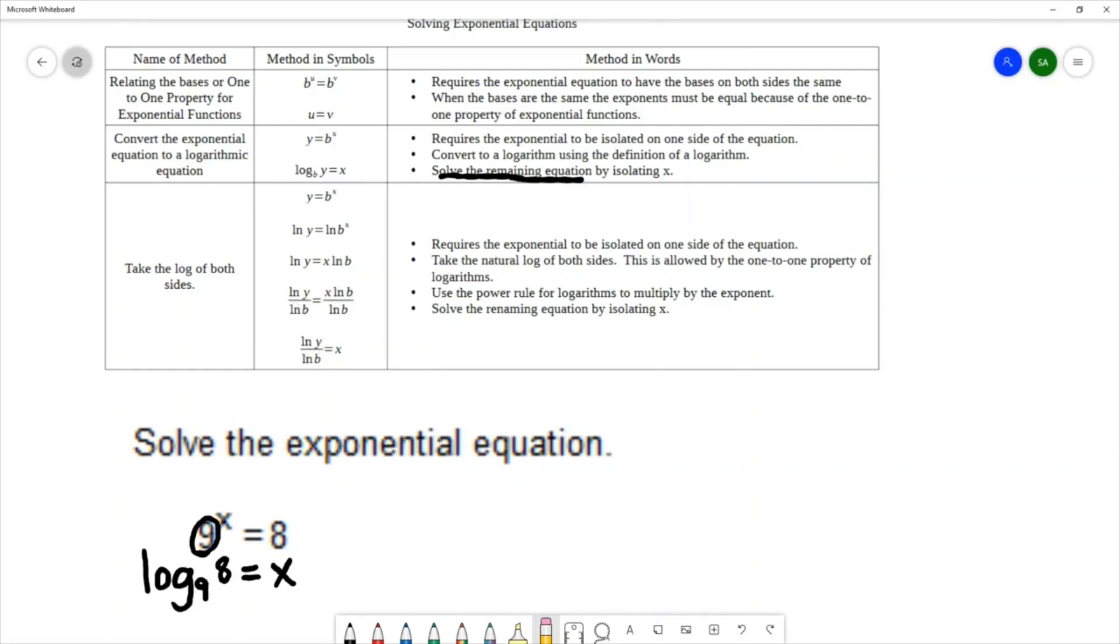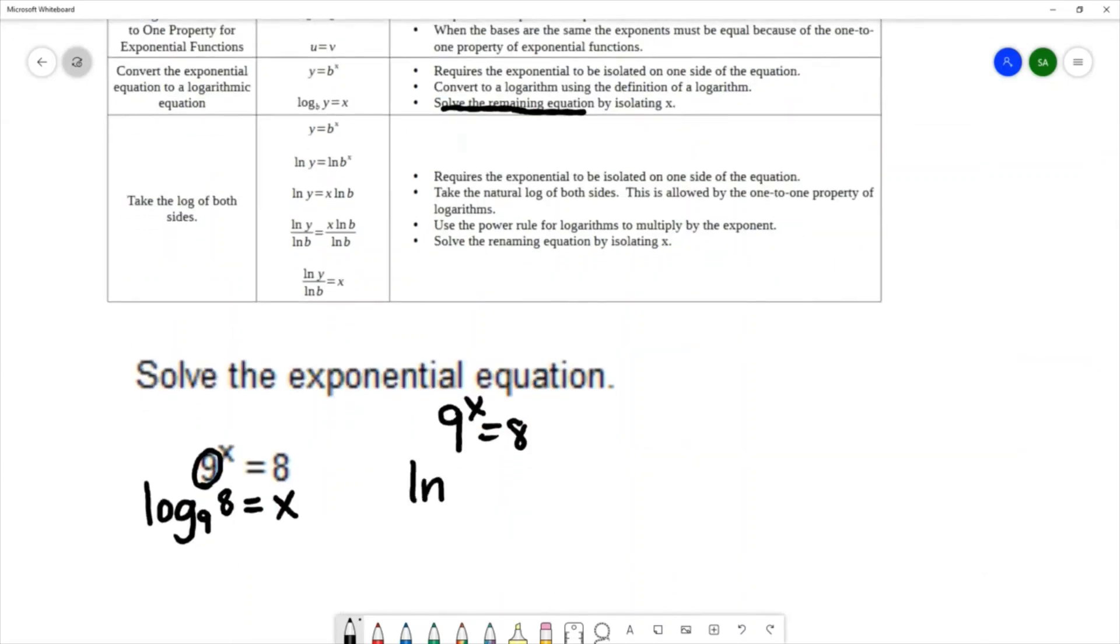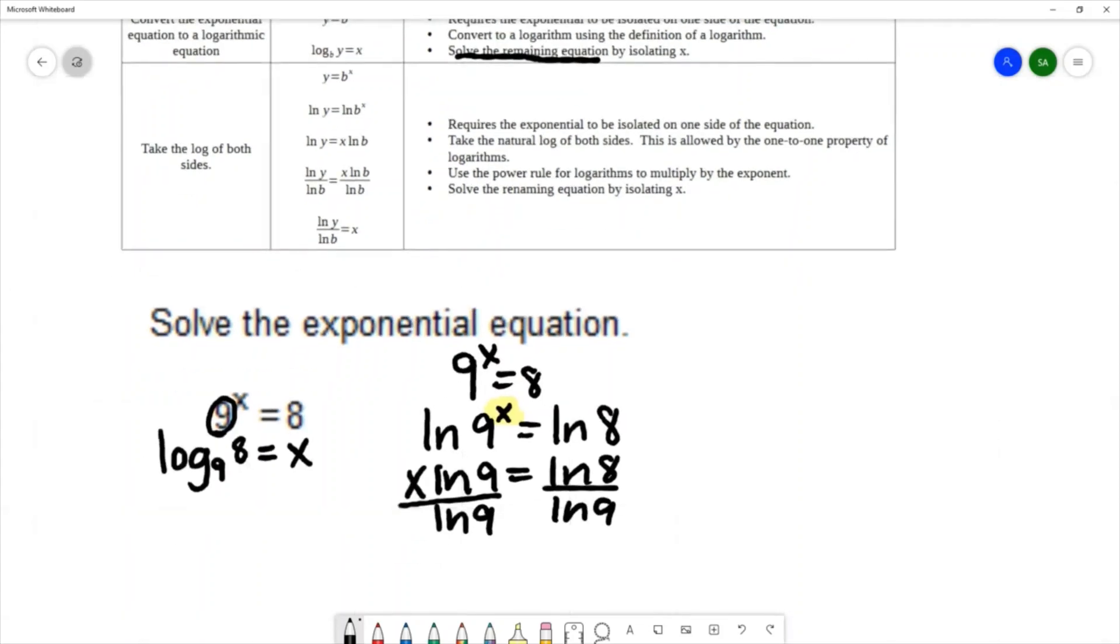So let's try that method on 9^x = 8. You would take the natural log on the left and the natural log on the right. Now that you've introduced the logs, you can use the power rule and make this variable x the coefficient on that log, and then you can solve for x by dividing both sides by natural log of 9. And we get the expression, or get the equation, x equals natural log of 8 over natural log of 9. So we were able to solve this equation with the third method as well.